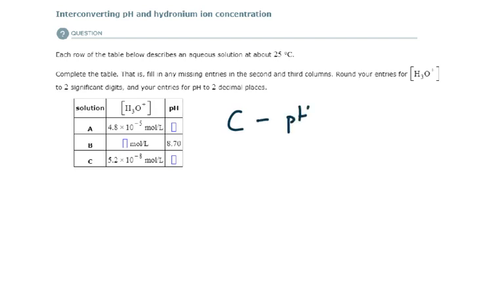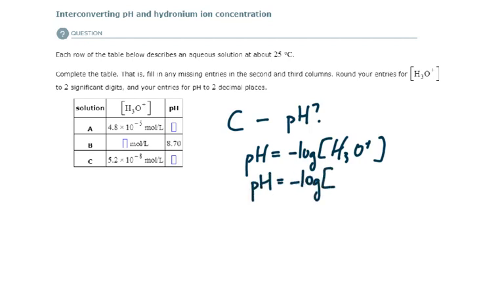They want us to find pH again. pH is equal to the negative log of the hydronium ion concentration. The pH is equal to the negative log of the given hydronium ion concentration, which is 5.2 times 10 to the minus 8.